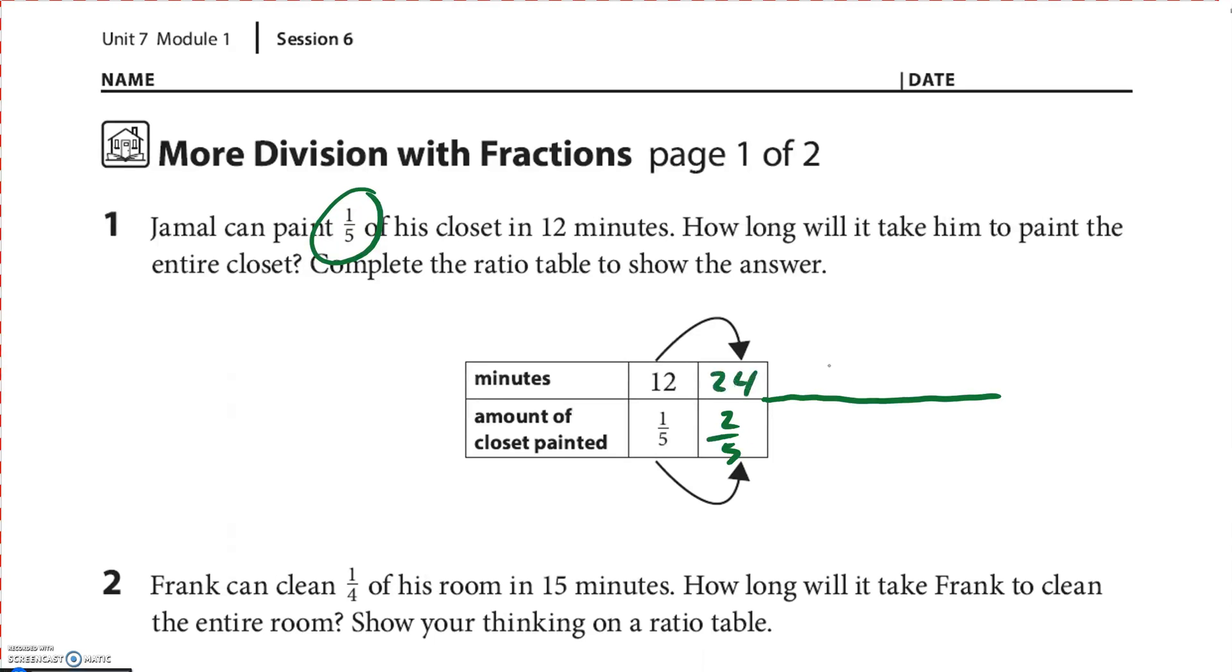So every single time I could just fill this out, three-fifths, that's just plus 12, four-fifths plus 12. So every time is plus 12. I could do that. Then five-fifths is what we want our answer, right? Or, what they were thinking is, what do I multiply one-fifth to get to five-fifths? Well, that's times five, right?